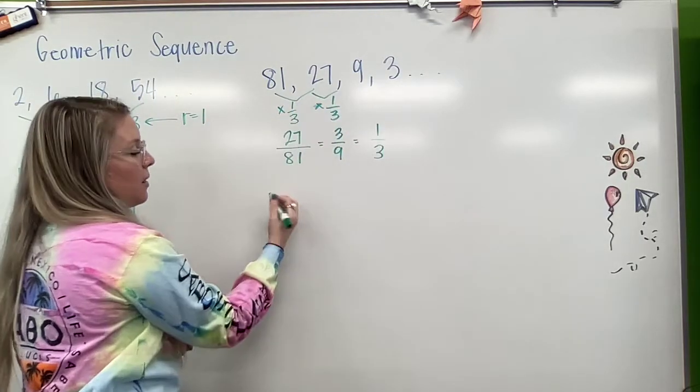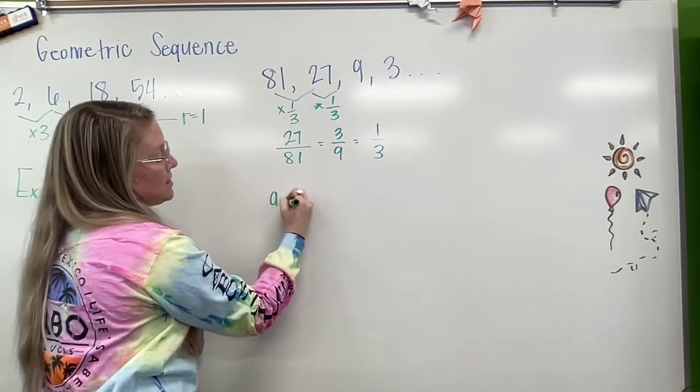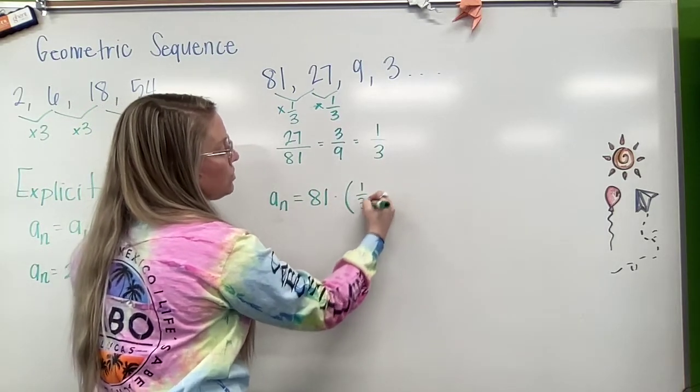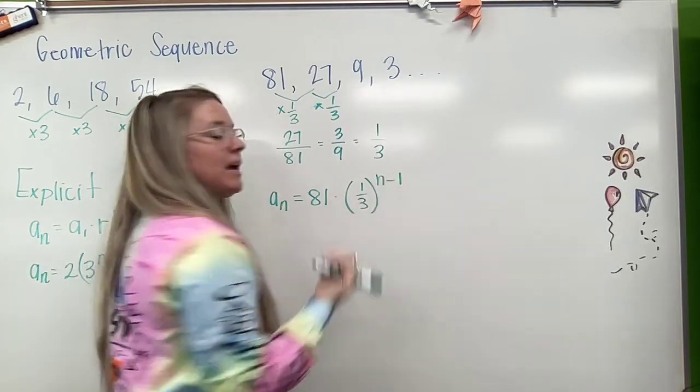So here, I could write this as a sub n equals 81 times 1 third to the n minus 1 power.